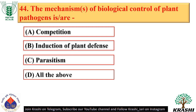Question number 44. The mechanisms of biological control of plant pathogens are competition, induction of plant defense, and parasitism. So option D — all of the above — is correct.